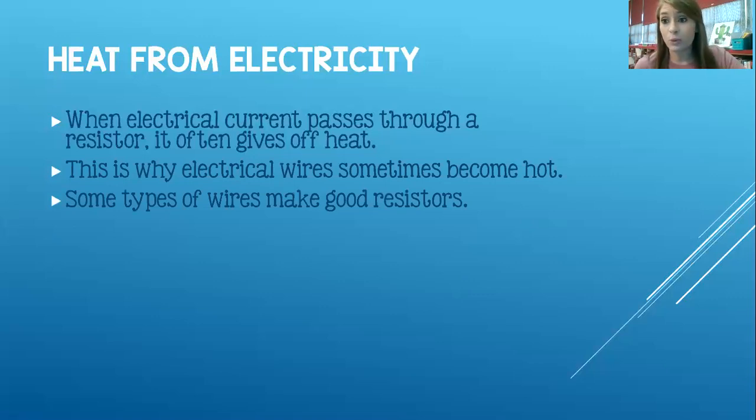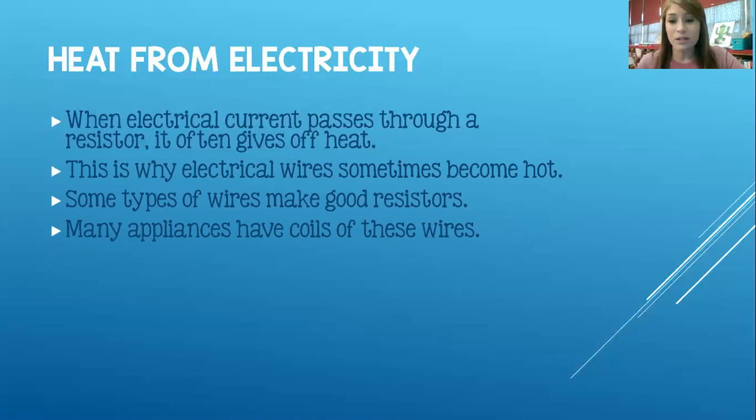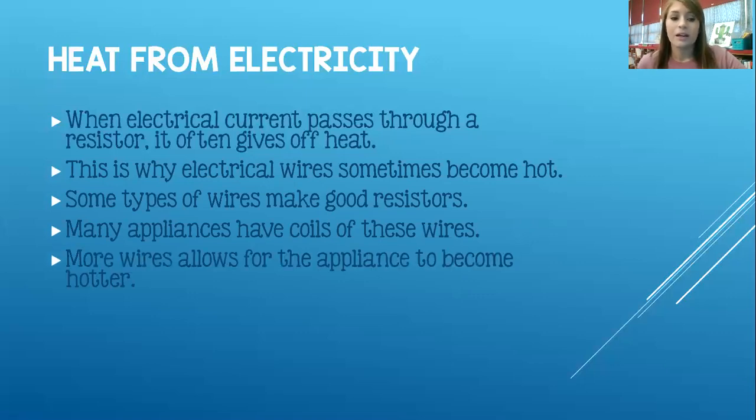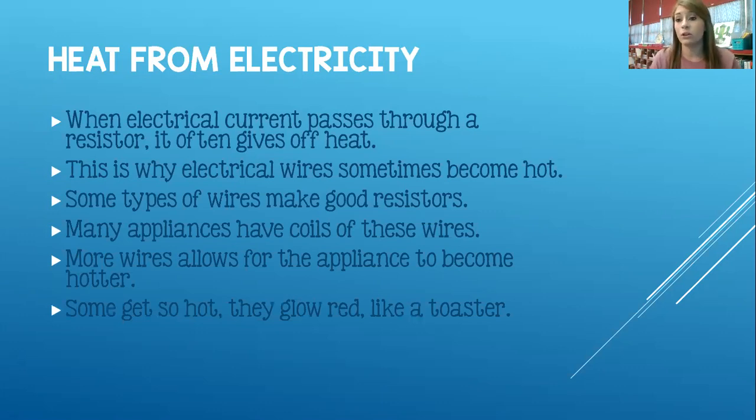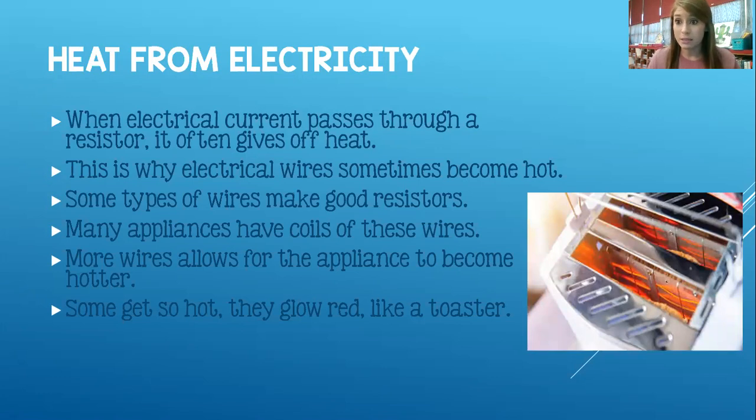So some types of wires make really good resistors. Many appliances have coils of these resistors or of these wires. More wires allows for the appliance to become hotter. So some get so hot that they glow red like a toaster. So hairdryers have a lot of these coils. Why do you think hairdryers would have to have a lot of these coils or these resistors in them? Right. Hairdryers have to get hot, right? To dry your hair or warm yourself up or dry a spot on your shirt or something. So hairdryers have a lot of those coils in them so that it can create more heat to get hotter. And same thing with toasters. These coils, these resistors on the inside heat up to cook your toast, right? To cook your bread and make it toasty. I love toast.